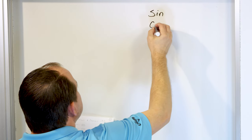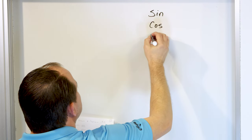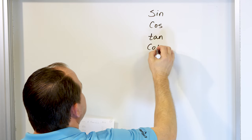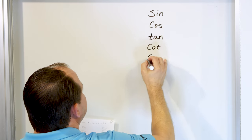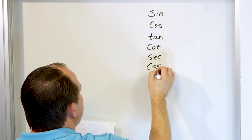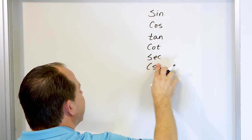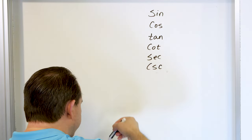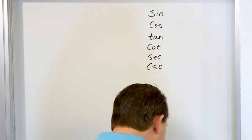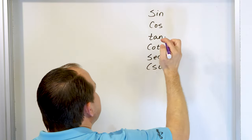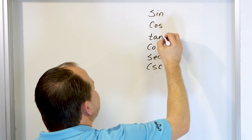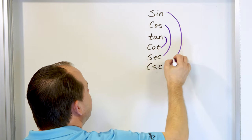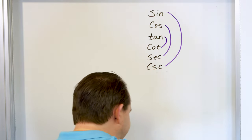So if you write down sine, followed by cosine, followed by tangent, followed by cotangent, followed by secant, and cosecant — C, S, C is cosecant. This is the order in which I want you to remember this stuff. Then if you draw a little triangle or a little rainbow right here, this is a good way to remember these identities.